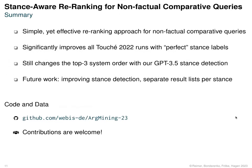To summarize, we proposed a very simple but yet effective re-ranking approach for non-factual comparative queries, where we could significantly improve all Touche runs when using the ground truth stance labels. And with our best stance detection model, GPT-3.5, we can still change the top three system order in the leaderboard. So in the future, we would like to spend time on improving the stance detection — as you can see, it's still quite low at 0.49 for the best model. And we want to experiment with separating the results lists per stance, showing one column for pro Paris, one column for pro London, and one neutral column. Our code is available on GitHub, so if you want to replicate our results, you are welcome to do so.